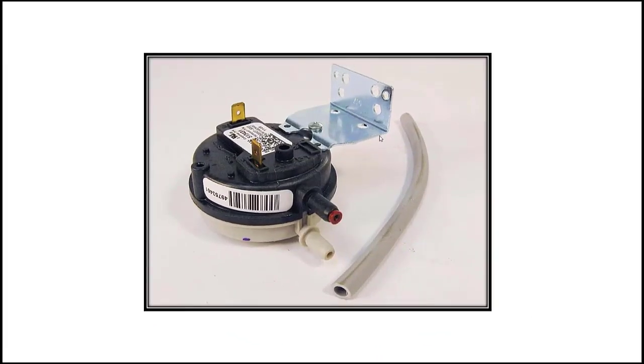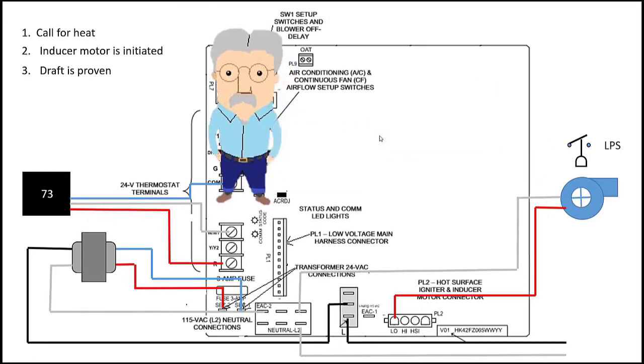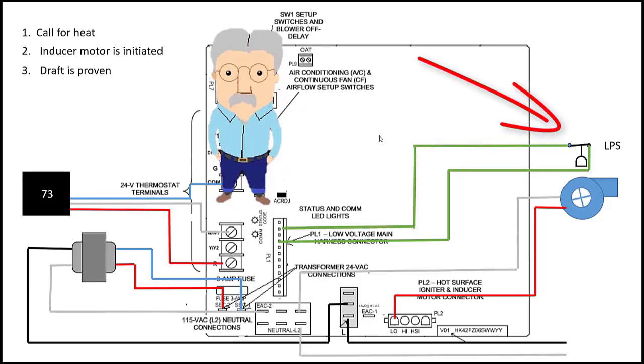We do that with a pressure switch. Here's what a pressure switch looks like. Here's our pressure switch and let's wire that thing up. When there is enough air flowing through the furnace that we know will have complete combustion, that pressure switch closes. That tells the circuit board it's time to go on to the next step in the sequence.